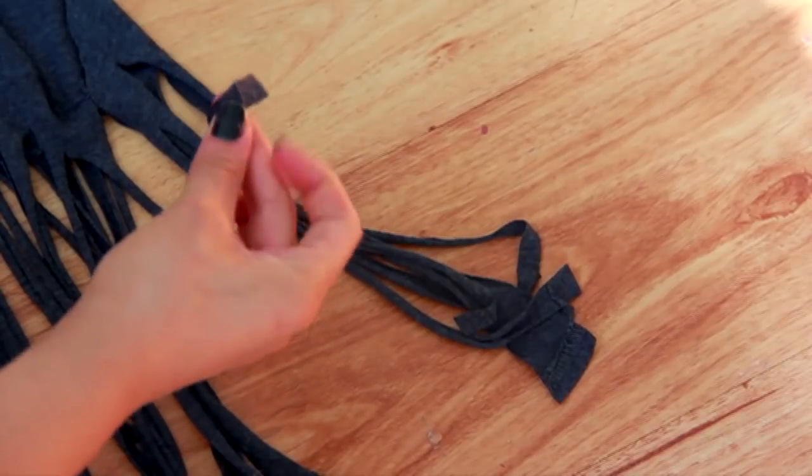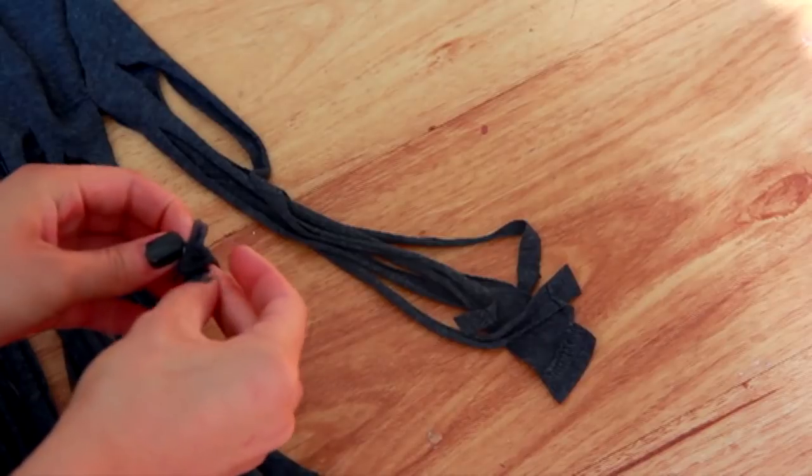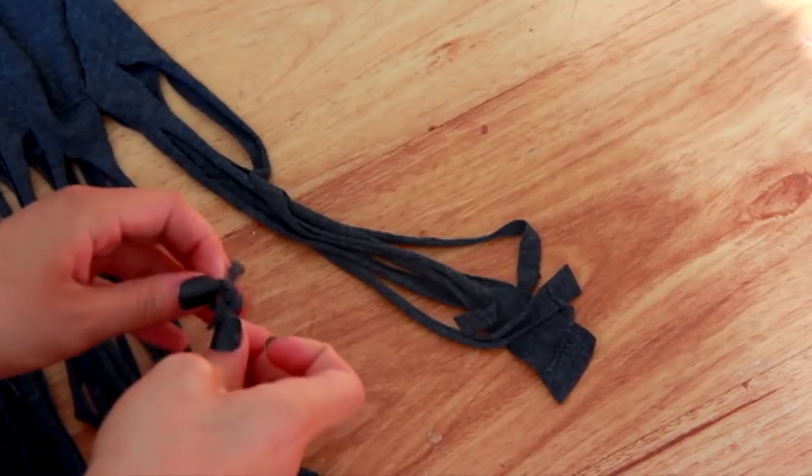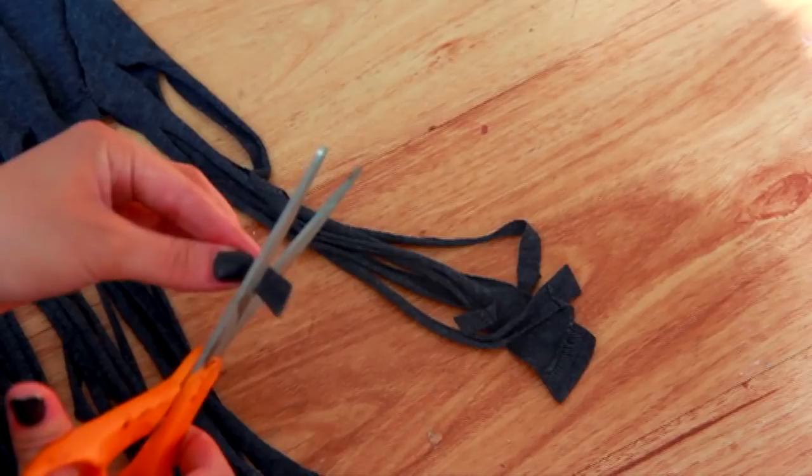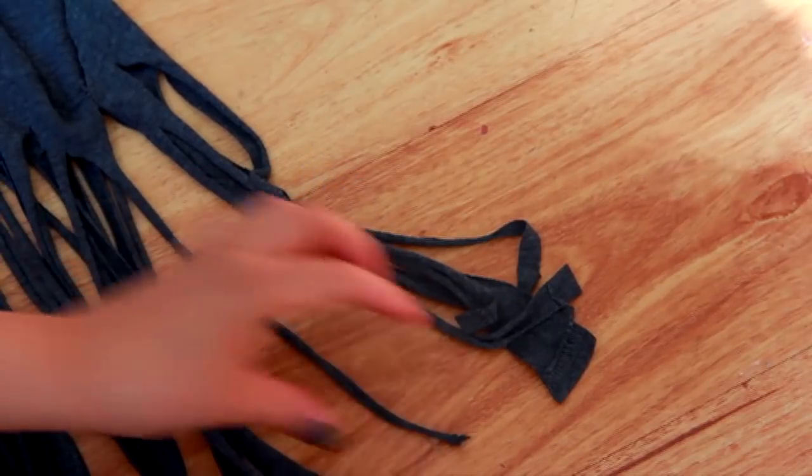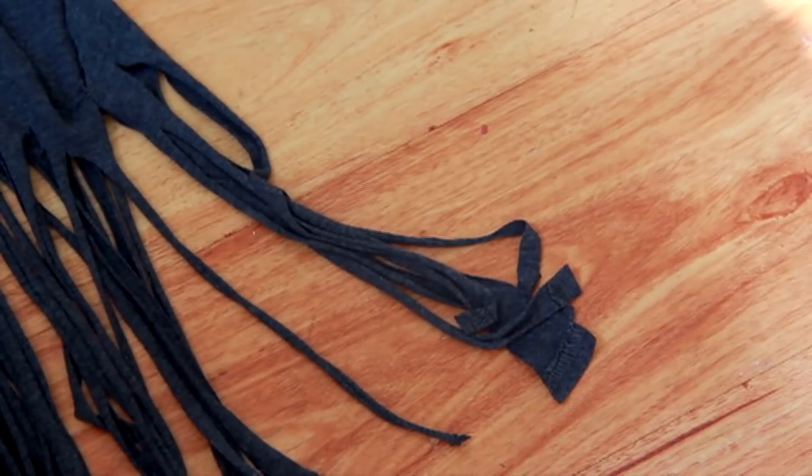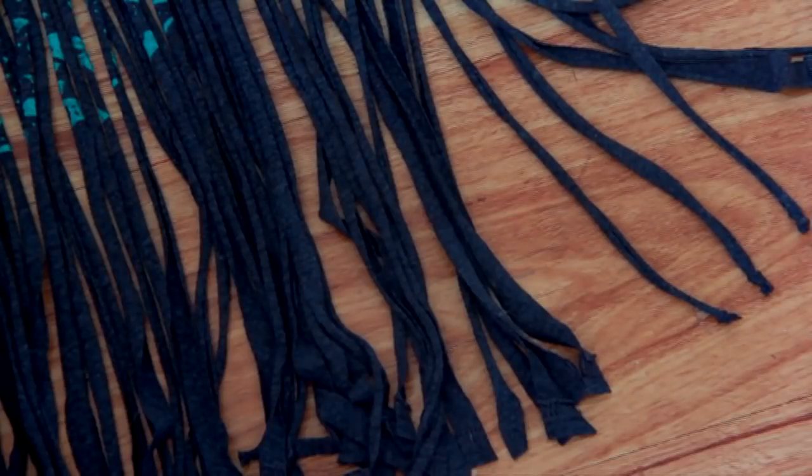So this is what I do to get rid of that and make it look more professional. I just take it and tie it in a knot, and then once I tie it in a knot, I cut that end off. It just looks cleaner, but that's optional. You can leave them if you don't mind, or you can just snip that end part off, or you can tie it in a knot—whatever you want to do.